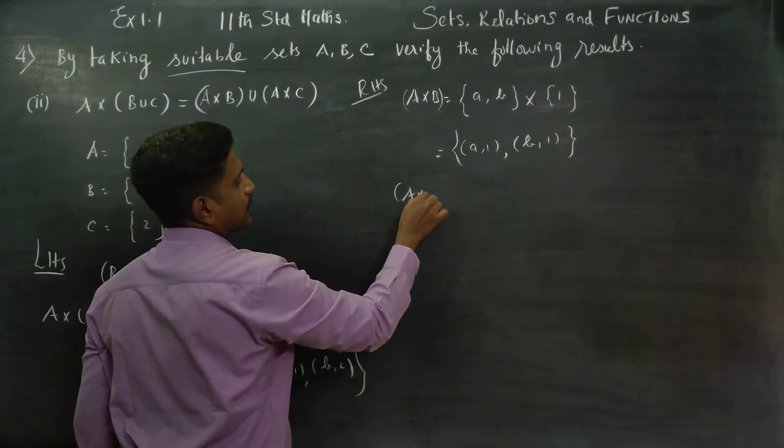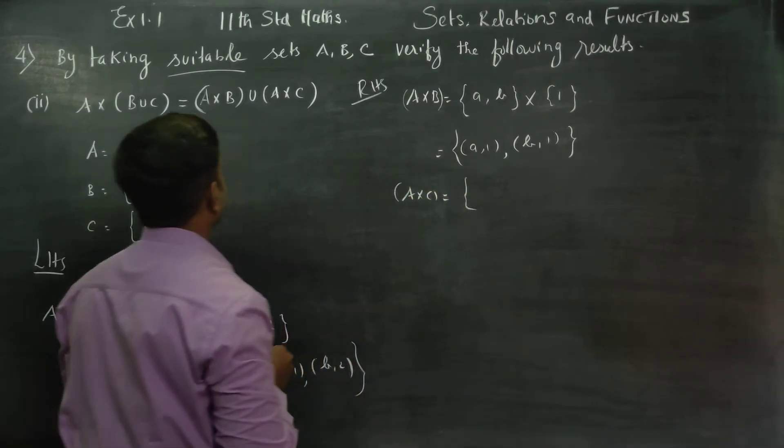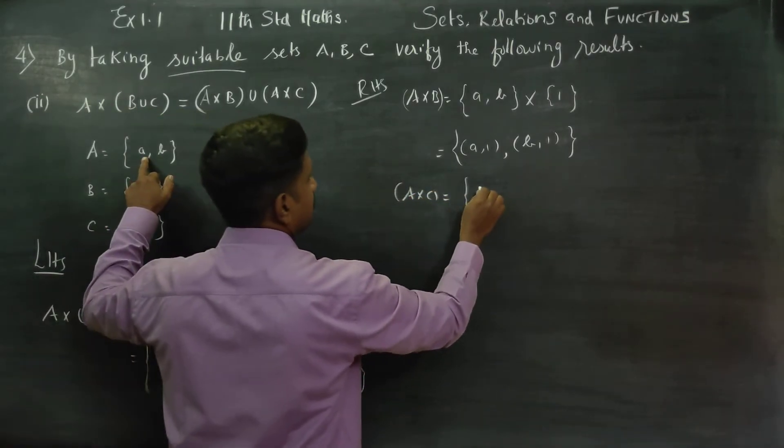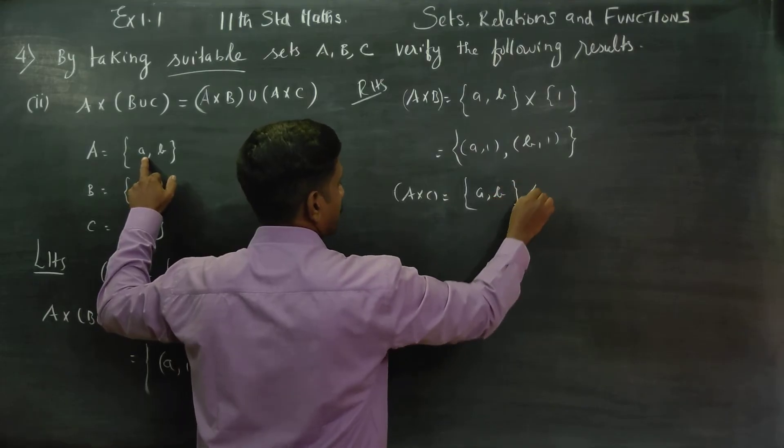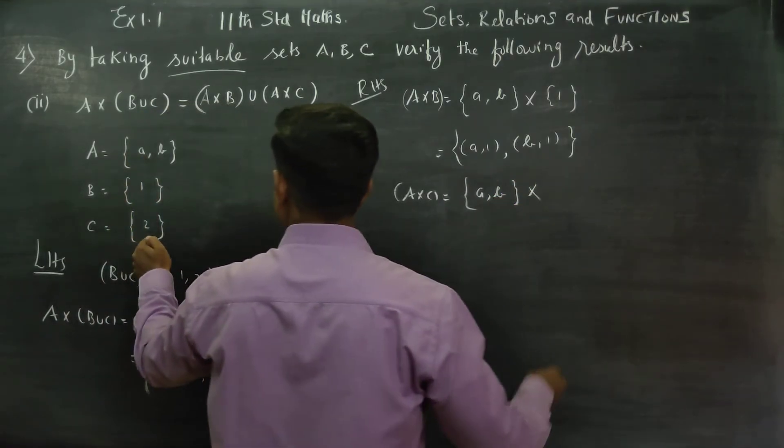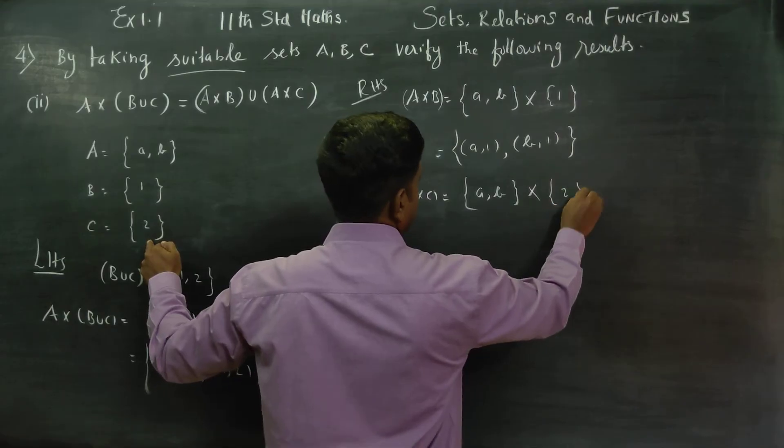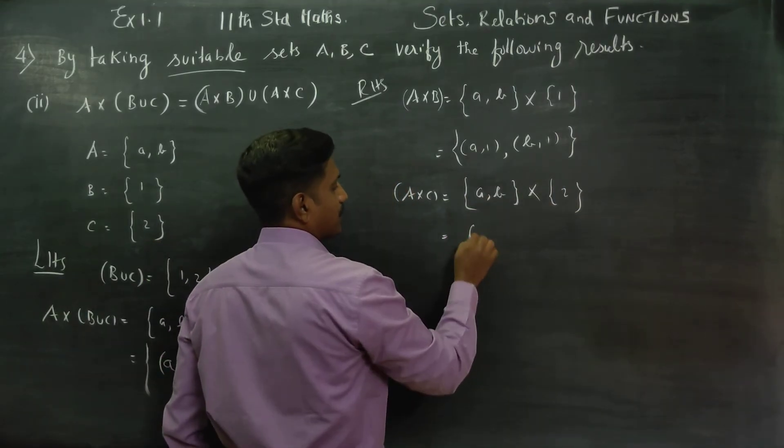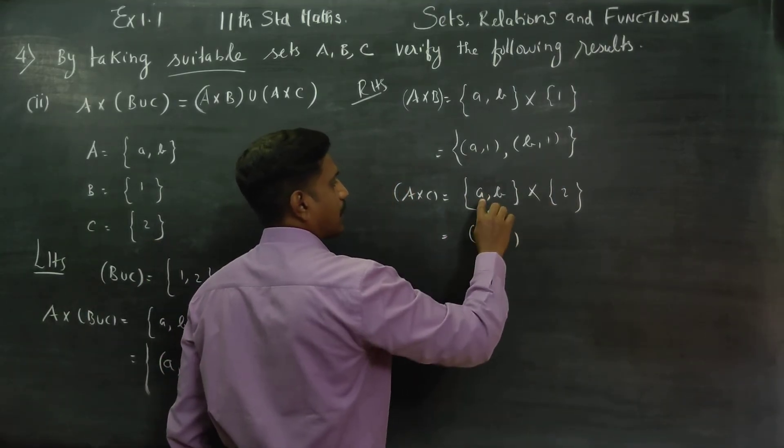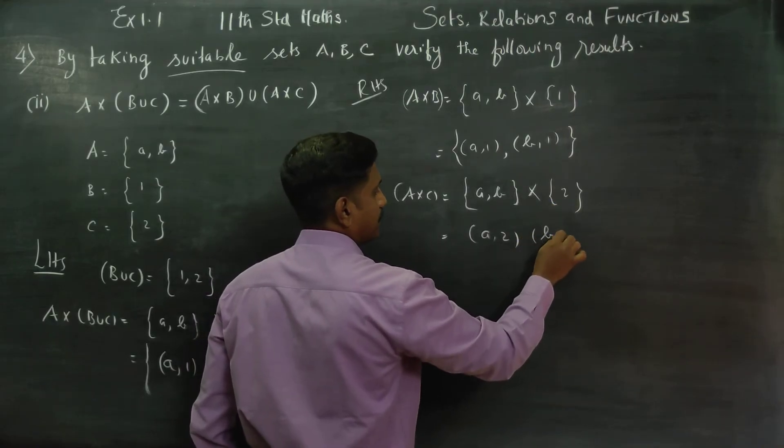Then I am entering into A cross C. What is my A, B? {a, b} cross what is my C? C is just 2. (a, 2), then (b, 2).